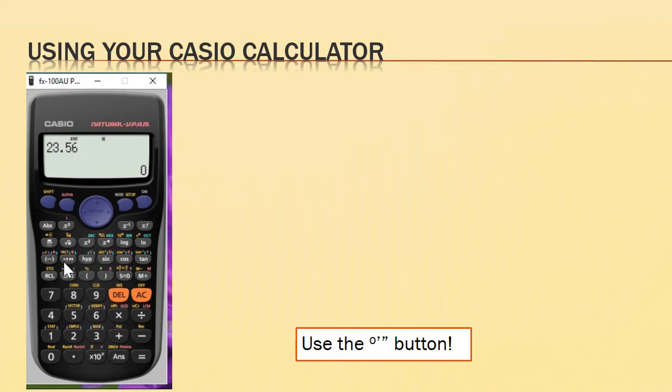If we use this button here, we have degrees, minutes and seconds. The superscript circle with a hole in it is the degrees sign. We have a comma for minutes and a double comma for seconds. So we've typed in 23.56 degrees. Just press this, and this will convert it to degrees, minutes and seconds.